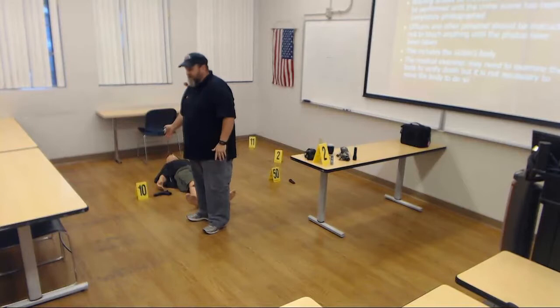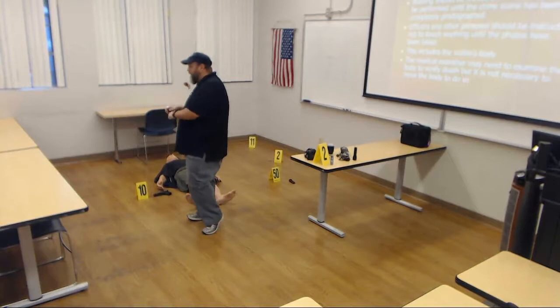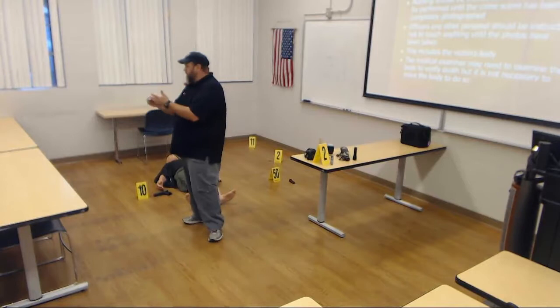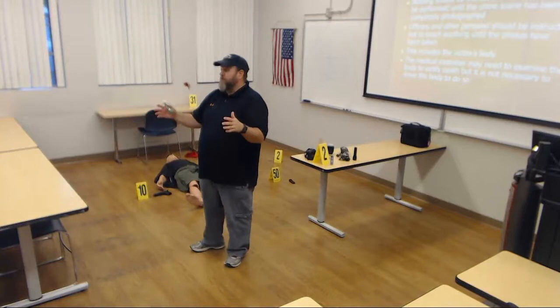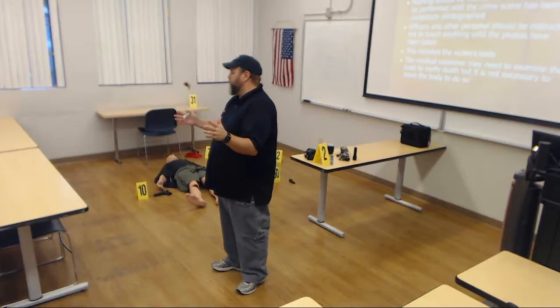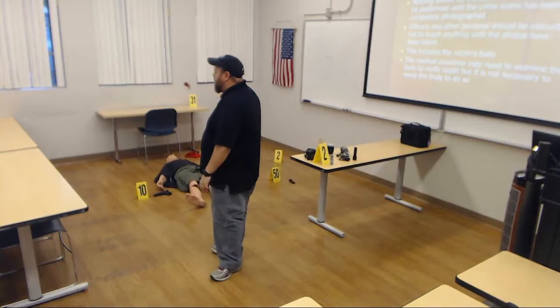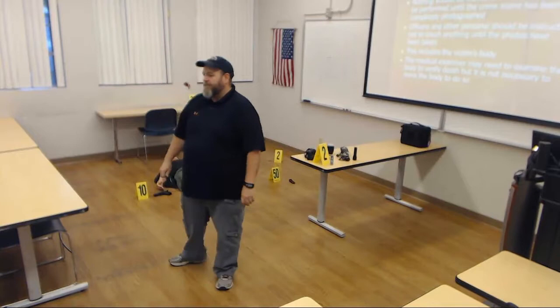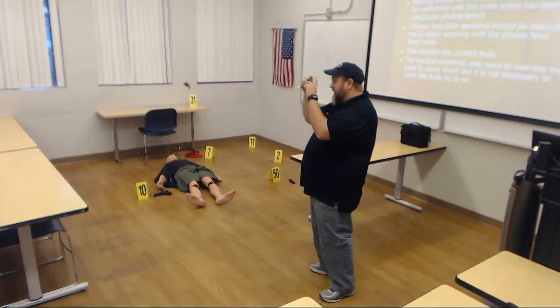We start by taking photographs, then make measurements indicating its location, create sketches, and start keeping notes. We always take pictures first because we need to record the crime scene in as close to its original, unaltered condition as possible. That is why the crime scene processor taking the photographs is the first person in the crime scene.